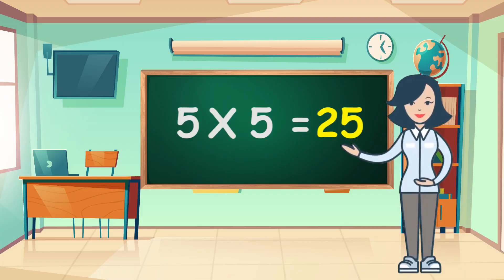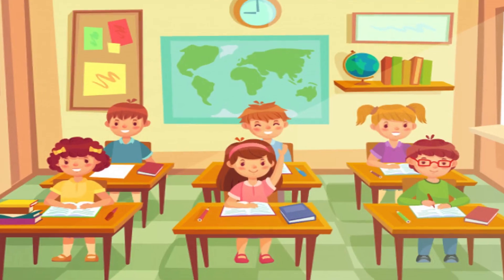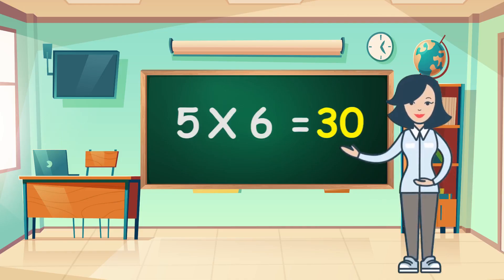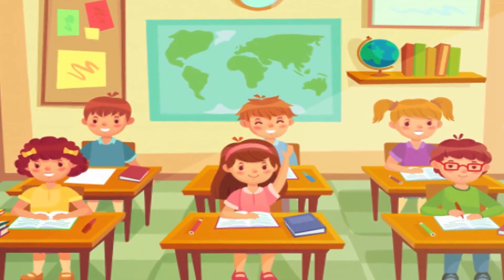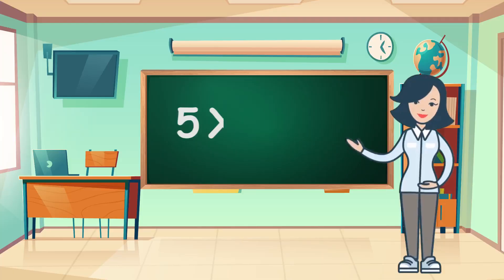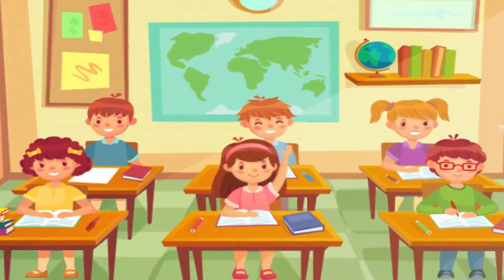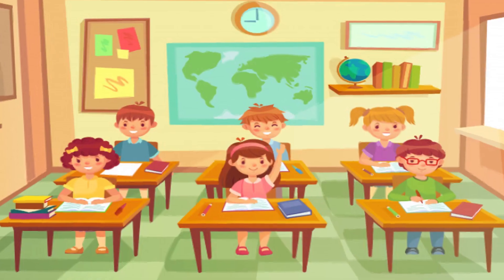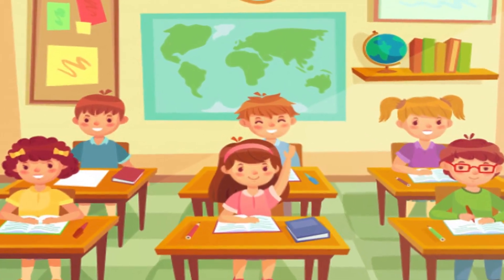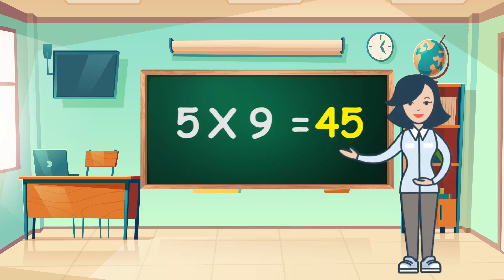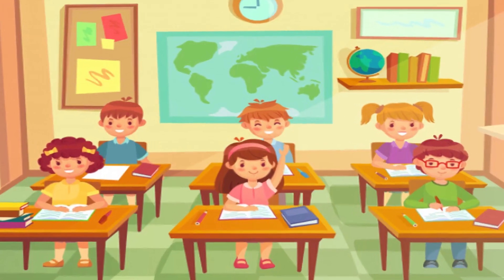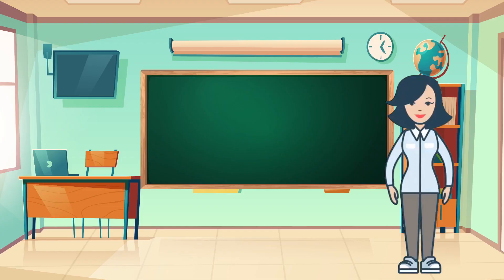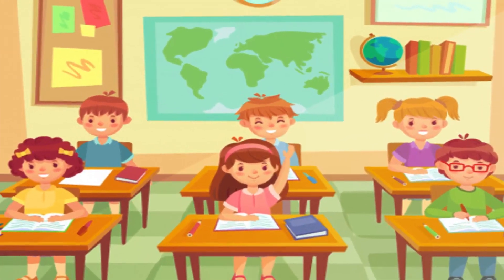Five fives are twenty-five. Five fives are twenty-five. Five sixes are thirty. Five sixes are thirty. Five sevens are thirty-five. Five eights are forty. Five eights are forty. Five nines are forty-five. Five tens are fifty. Five tens are fifty.